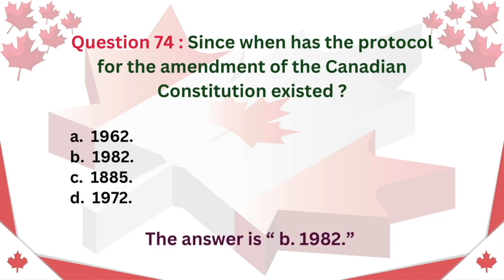Question 74. Since when has the protocol for the amendment of the Canadian Constitution existed? A. 1962 B. 1982 C. 1885 D. 1972. The answer is B. 1982.